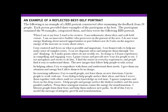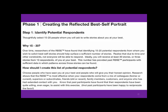The next few slides focus on completing the reflected best self exercise. The first step—slide 15—is to identify potential respondents. You're looking at 15 to 20 people; the more you have, the easier it is to begin identifying themes. Choose people who have seen you at your best and who will give you an honest opinion. You will find that people are quite willing to participate in this exercise with you.